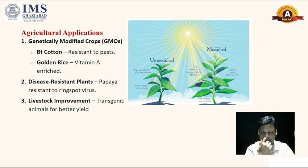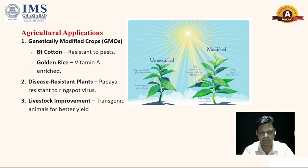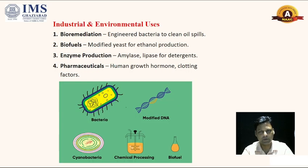There are several applications in agriculture as well. We are using Bt cotton, which carries a gene that confers resistance to pests. We are using golden rice, which is enriched with vitamin A. There are disease-resistant plants like papaya, which is resistant to ring spot virus, and livestock improvements such as transgenic animals with better milk yield. RDT is also important in agriculture.